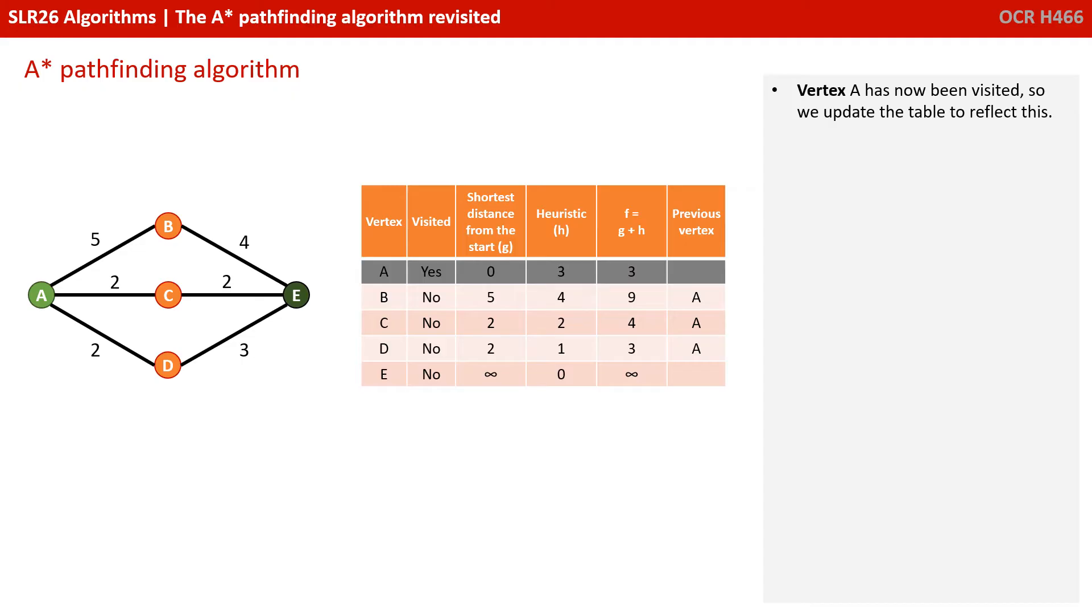Vertex A has now been visited, so we update the table to reflect this. We search for an unvisited vertex with the lowest F value, well that's D, with an F value currently of 3.